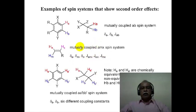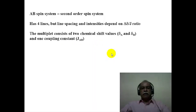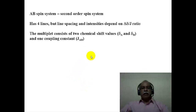The number of spin systems, the chemical shift value, and the J value that can be extracted are given in this slide. Now, let us consider a two-spin system, namely the AB system. In the AB system, there are two spins and hence four lines are expected, but the line spacing and the intensities depend on the ratio of delta-delta to J. The multiplet consists of two chemical shift values, delta_A and delta_B, and one coupling constant J_{AB}.